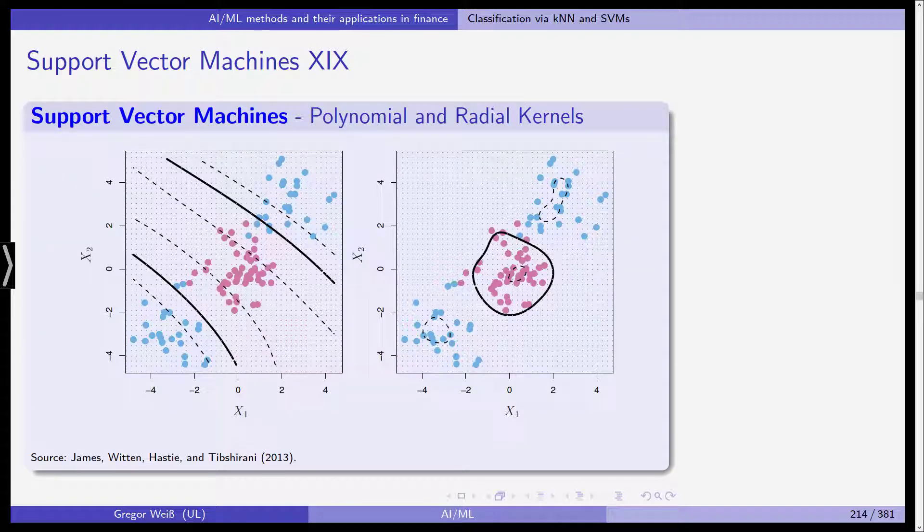And what we get is a much finer way of classifying these observations. On the left-hand side, you see a polynomial kernel. You see that we have our observations here, and we would have liked those red observations to be separated from the blue ones, and the polynomial kernel does this. And actually, as you can see on the right-hand side, the radial basis function kernel works even better. So, these are support vector machines.